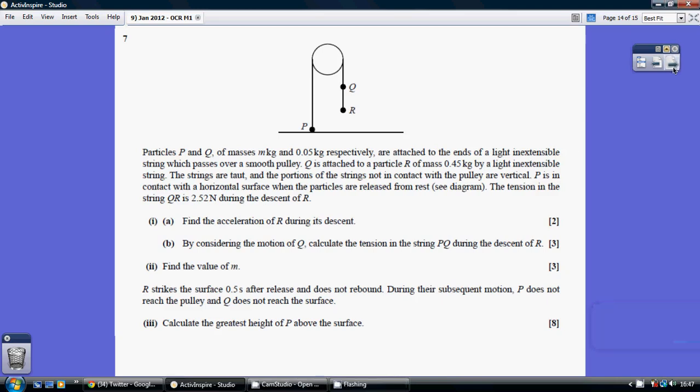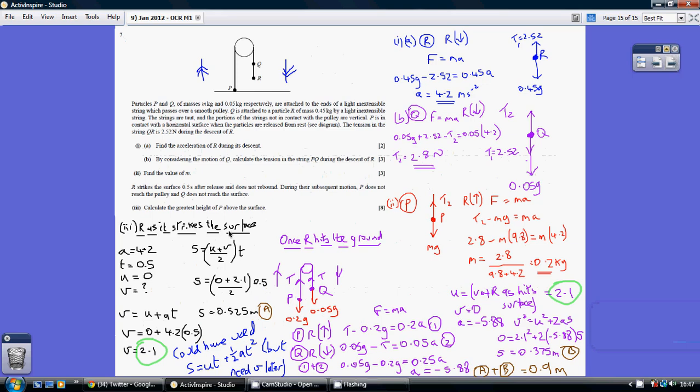Question 7. Part 1, 1A, find the acceleration of R during its descent. So just looking at R, a little diagram here, we've obviously got its weight going downwards and the tension in the string between Q and R of 2.52. Resolving downwards, the direction of the movement,